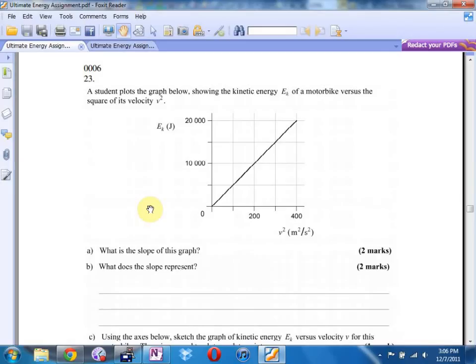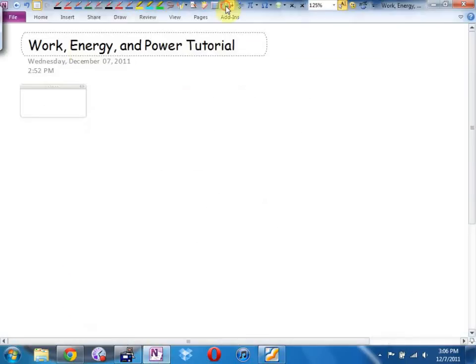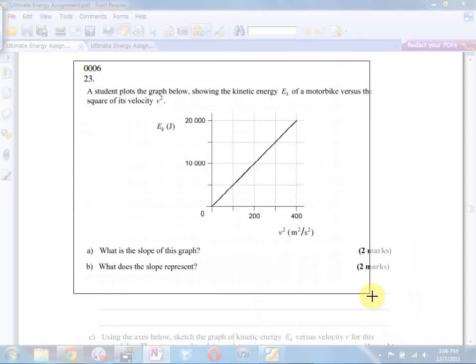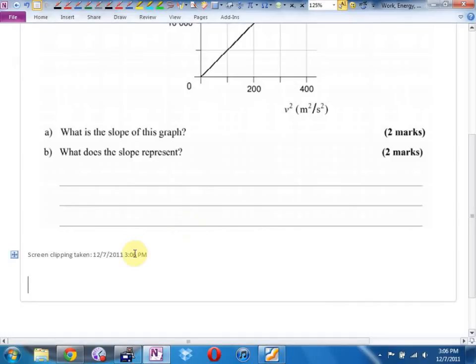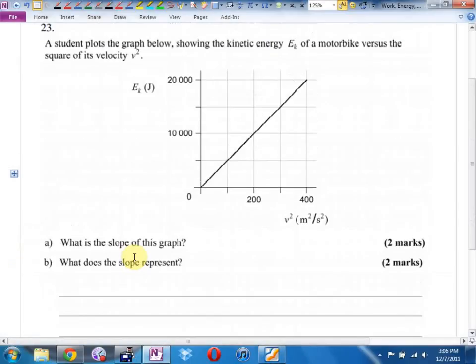So this is an interpretive graph question. We did a short little lesson on that. It's either going to be the slope or the area, almost always. The student plots a graph showing the kinetic energy, ek, versus the square of its velocity, v squared, and it's asking me the slope. First thing I'm thinking is I have an equation that has both of those in it. Kinetic energy equals a half mv squared. Is that okay so far?